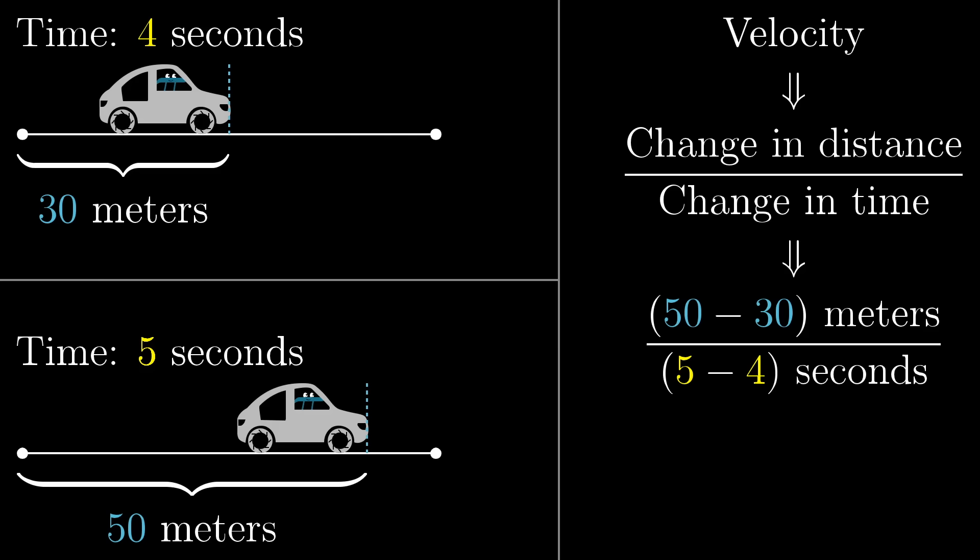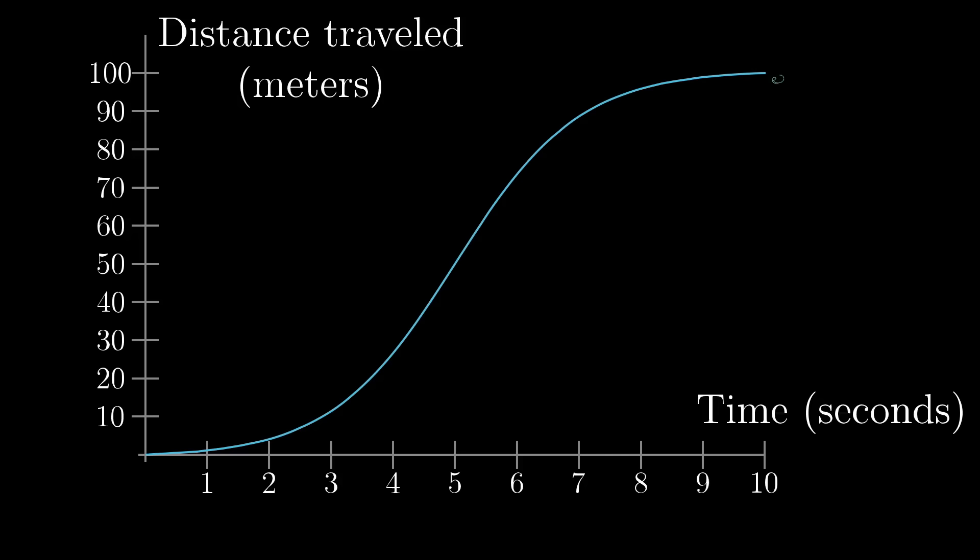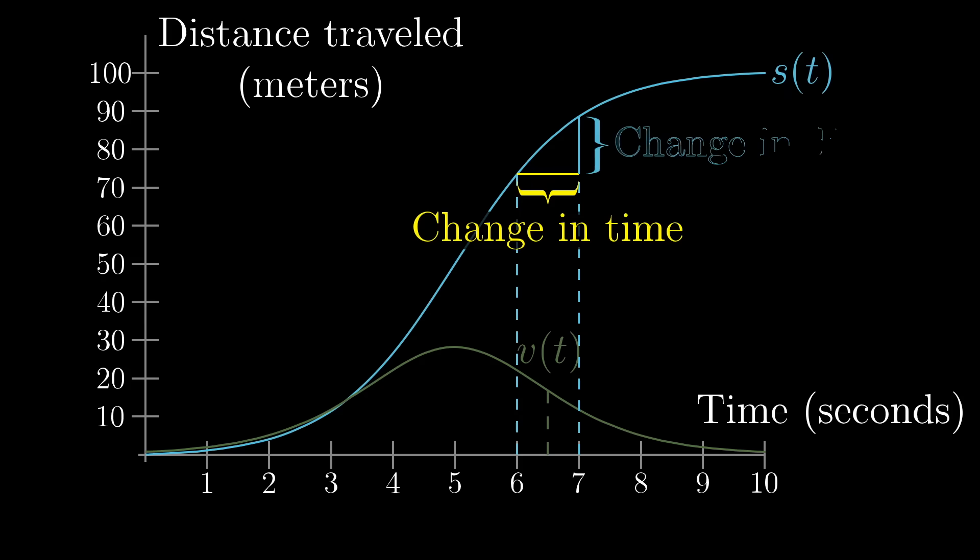Right? I mean, that's what velocity is. It's the distance traveled per unit time. So how is it that we're looking at a function for velocity that only takes in a single value of t, a single snapshot in time? It's weird, isn't it? We want to associate individual points in time with a velocity, but actually computing velocity requires comparing two separate points in time.